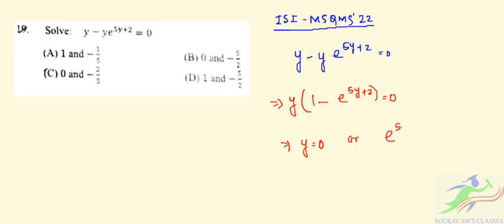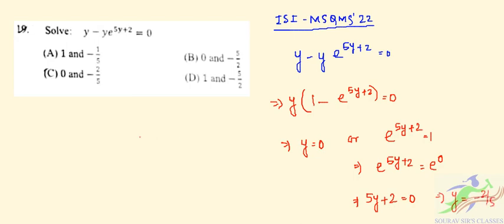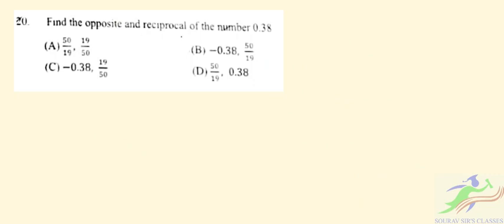...e^(5y+2) equal to 1. We can write e^(5y+2) equal to e^0, so 5y plus 2 equal to 0, giving y equal to minus 2 by 5. So our values for y are y equal to 0 and minus 2 by 5. The correct option is option C: 0 and minus 2 by 5.